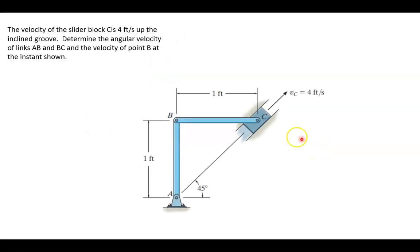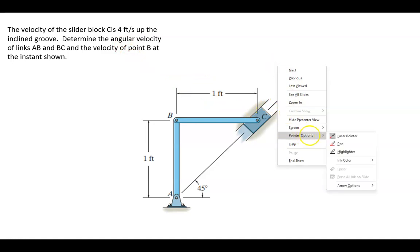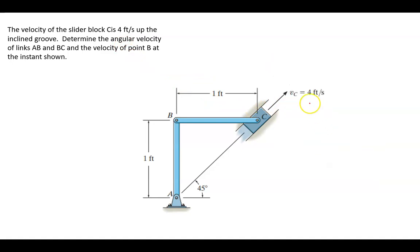So here in this example, you have the velocity of the slider block C is 4 feet per second. So here we have this, it's 4 feet per second up this incline groove. This is very similar to how we saw the piston in that little image.